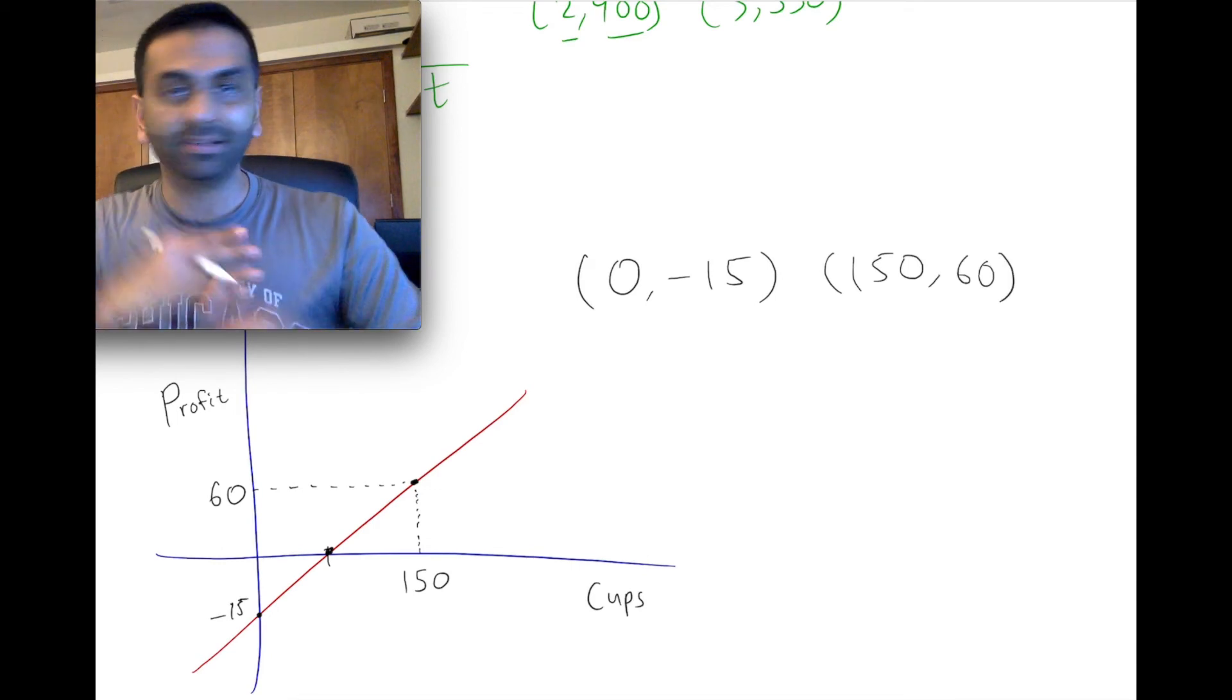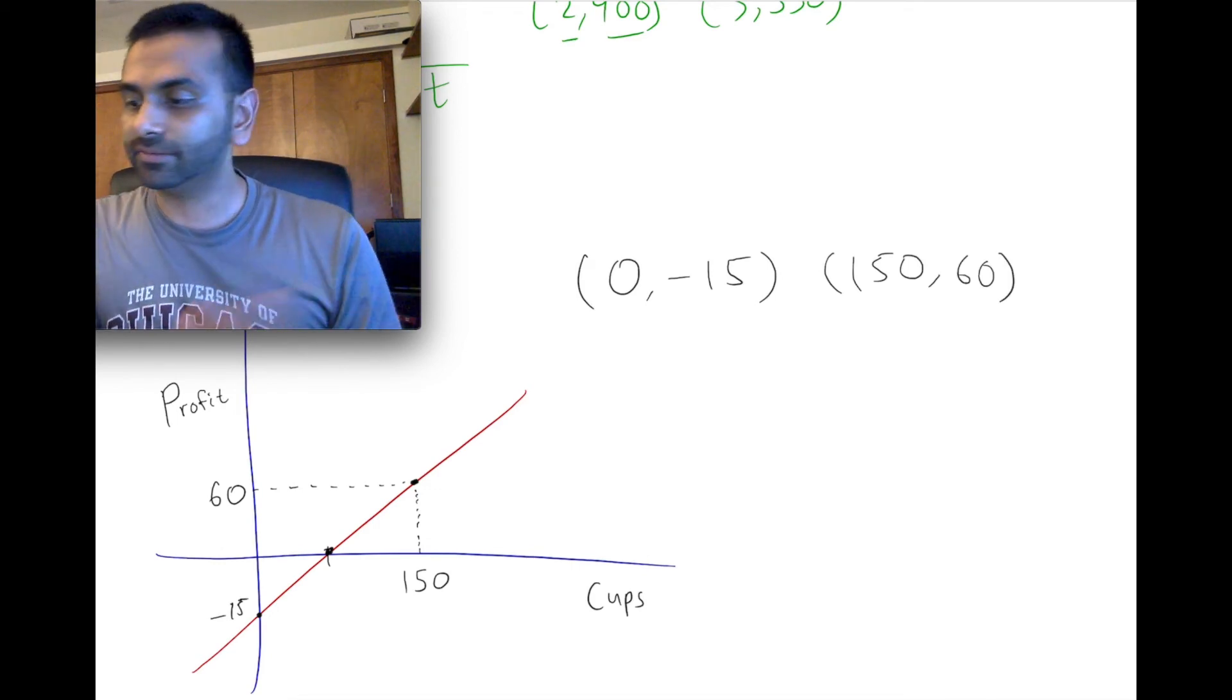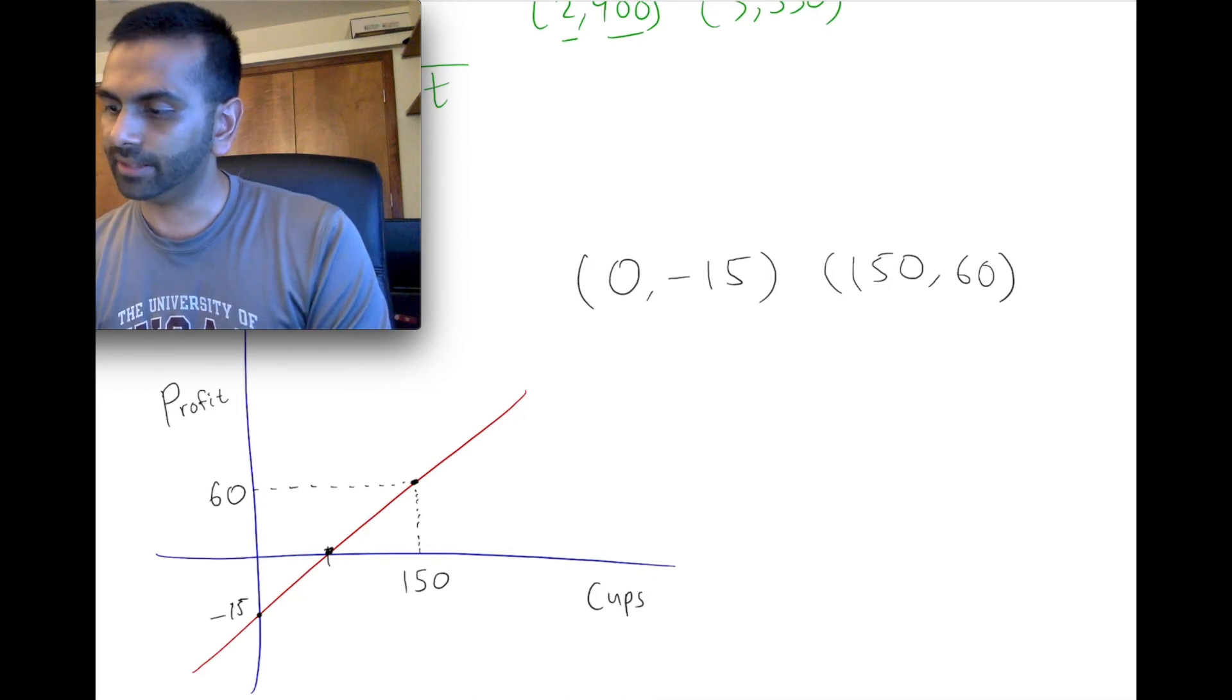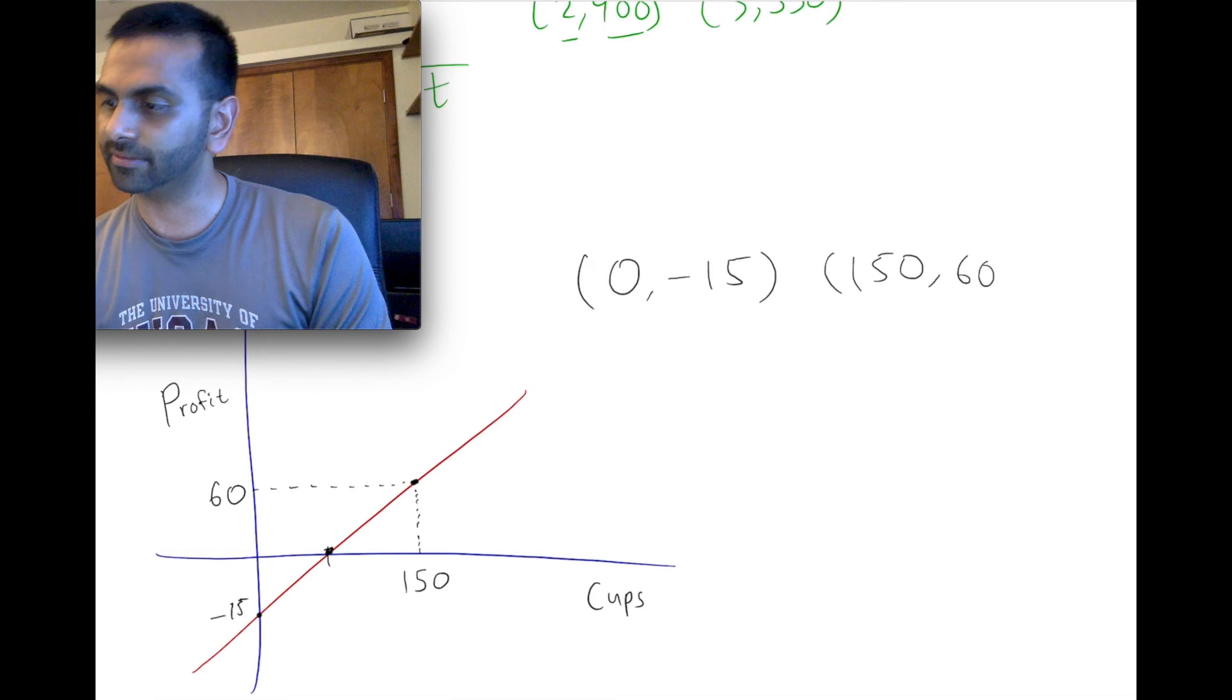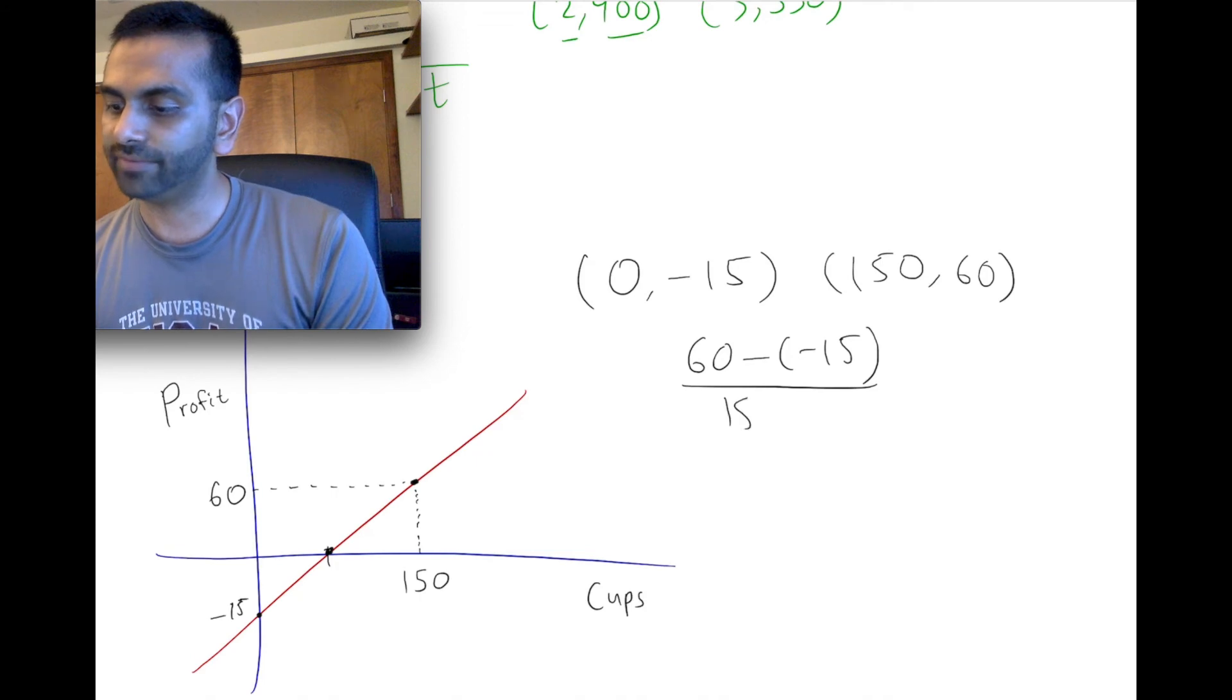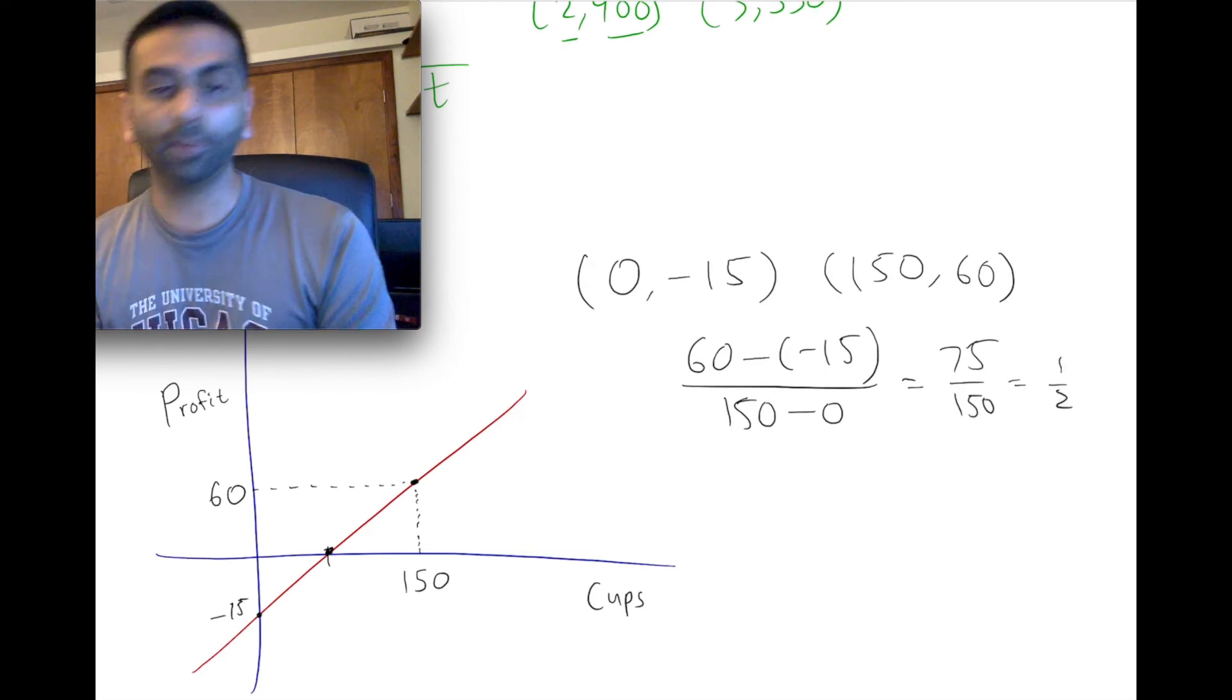So given these two points, let's find the slope, rise over run. So the rise over run would be 60 minus negative 15 over 150 minus zero. So that's going to be 75 over 150, which is a half.